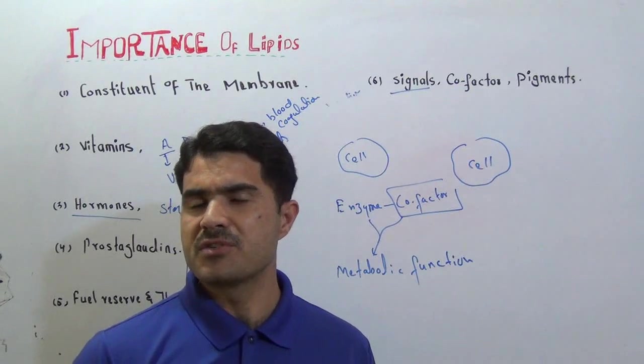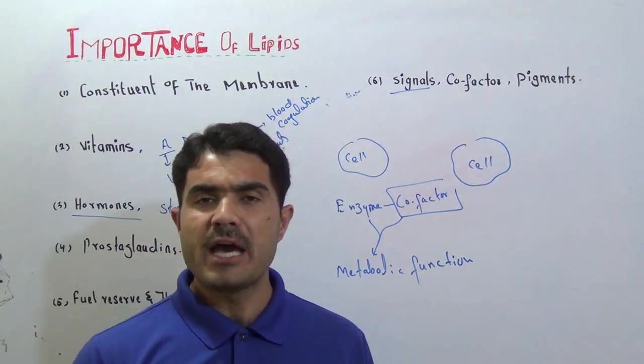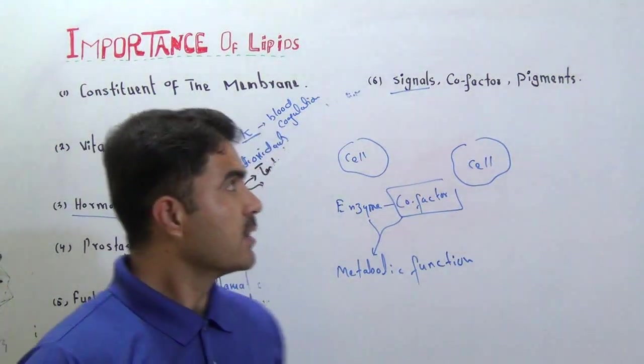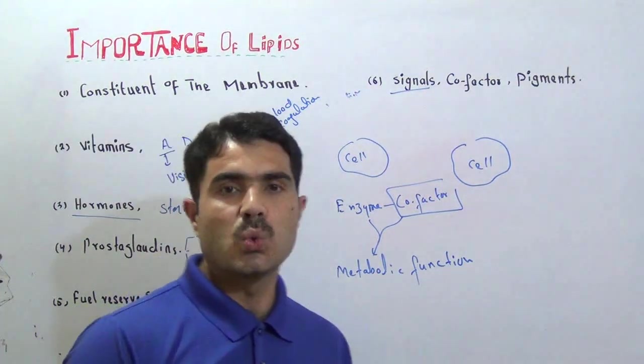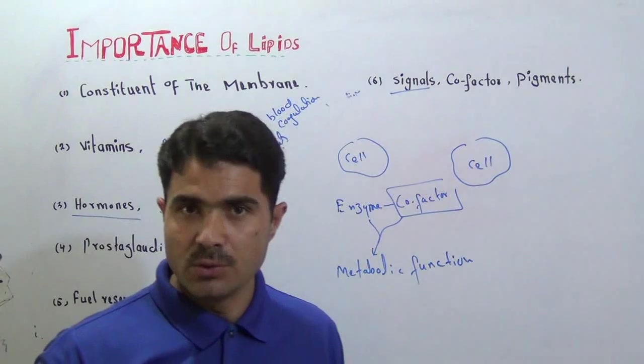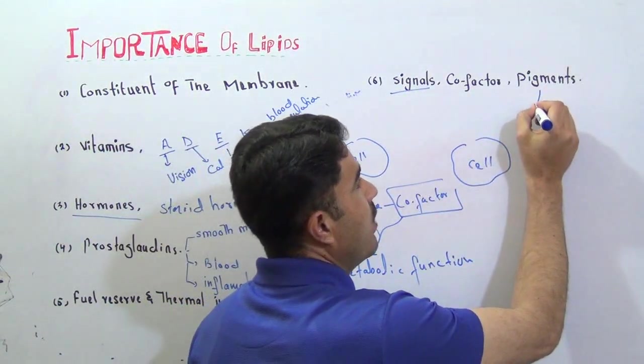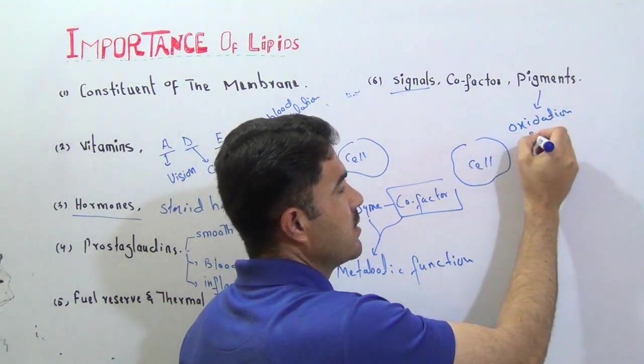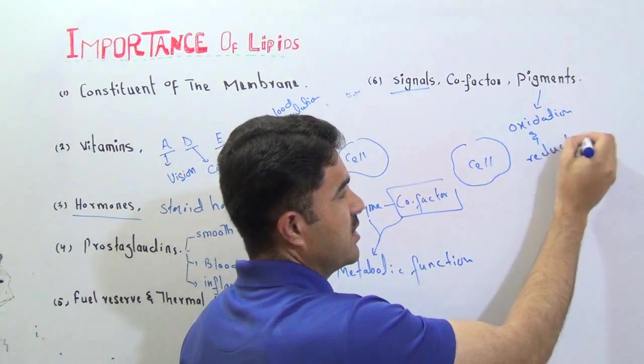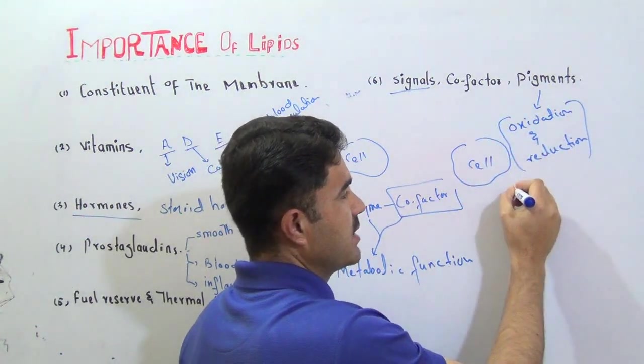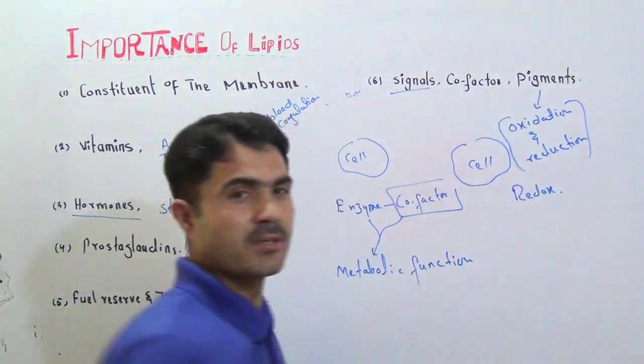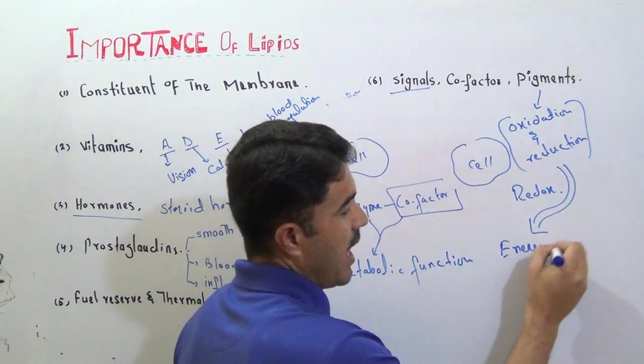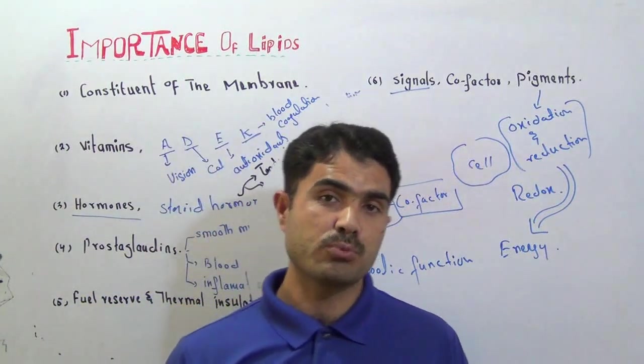The last one is pigments. Pigments are coloring substances. You can get it by discussing photosynthesis in plants where we have pigments that absorb light and help in photosynthesis. But in animals, the pigments refer to those substances which get oxidized or reduced and are involved in oxidation and reduction processes. These are collectively called redox reactions, and these reactions finally give us energy through electron transport chain.